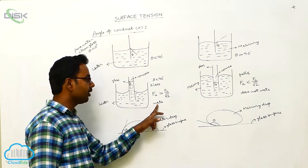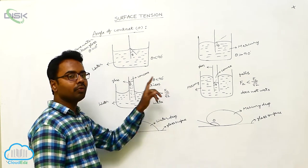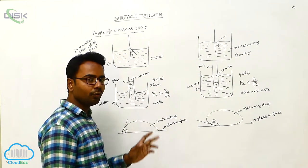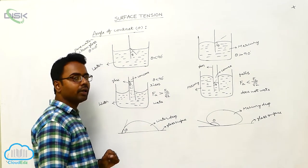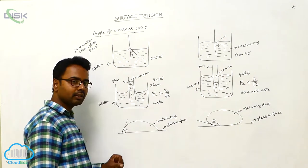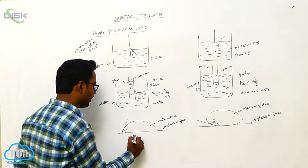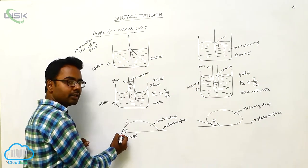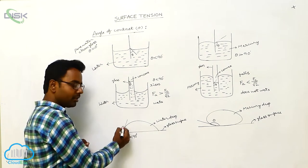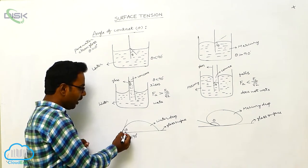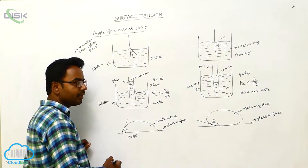Water wets the glass surface, which is why the angle of contact is less than 90 degrees. For all solid-liquid combinations whose angle of contact is less than 90 degrees, wetting takes place — that liquid wets the solid surface. When we observe a water drop on a glass surface, the angle of contact is also found to be less than 90 degrees, defined as the angle between the tangent to the liquid surface at the point of contact and the solid surface, measured inside the liquid.